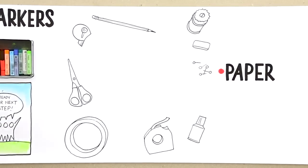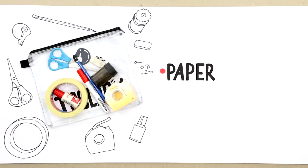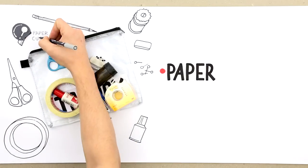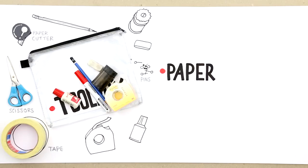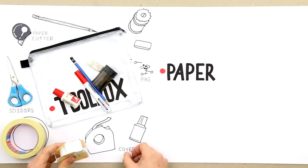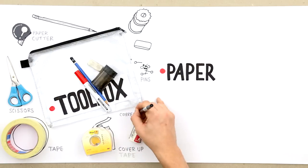Markers will get you far but there's more to add to your toolkit. You want a paper cutter, a pair of scissors, and masking tape to stick together and hang stuff all over the place. You want cover-up tape and correction fluid to correct mistakes. Don't be afraid of them.